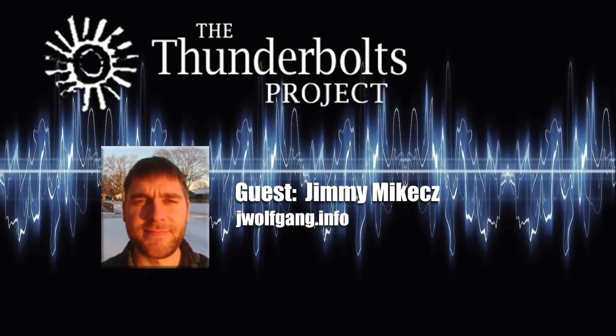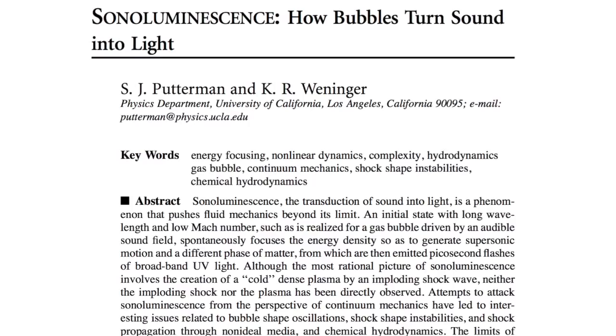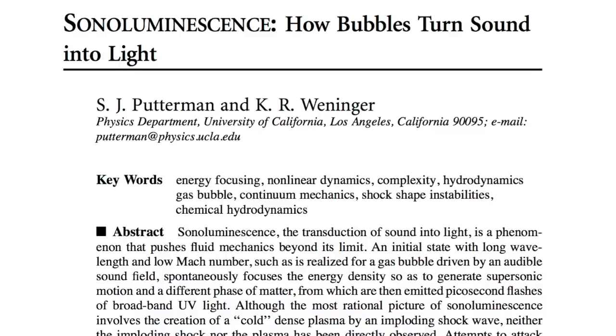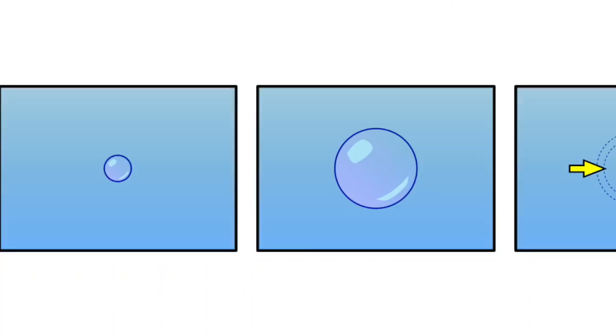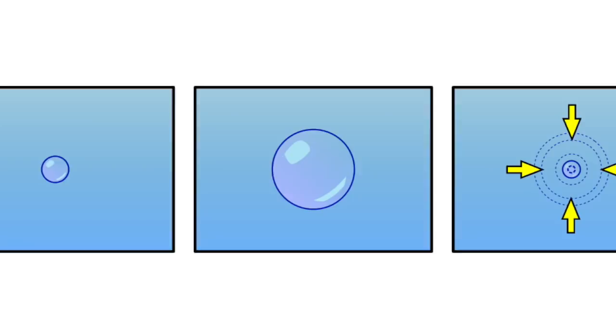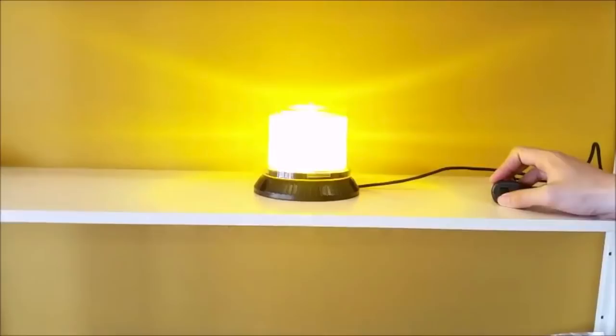In a study at UCLA called Sonoluminescence, How Bubbles Turn Sound into Light, scientists S.J. Putterman and K.R. Wenninger explore the mathematics and phenomenology of sonoluminescence. It is known that this phenomenon is caused by the rapid expansion and contraction of a bubble. This is known because the broadband UV light emitted appears at a frequency, though not continuously.